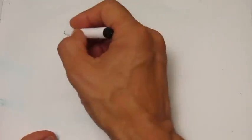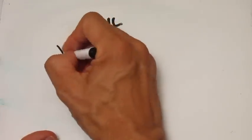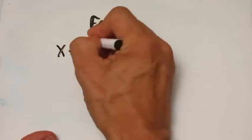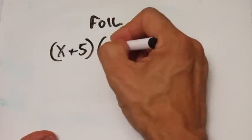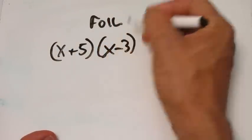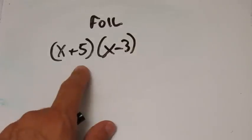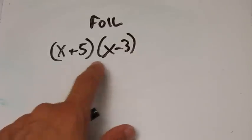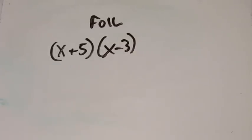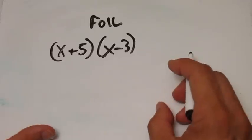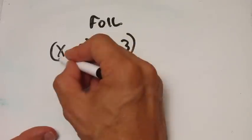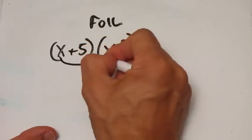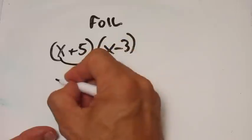We will go over FOIL briefly. You can use it, for example, when you have a polynomial like x plus 5 times x minus 3. So you have x plus 5 in one polynomial and x minus 3 in the other. You multiply these two together. FOIL stands for First — the first term here multiplied by the first term there — and you get x squared.